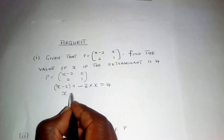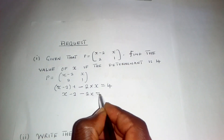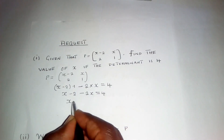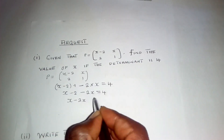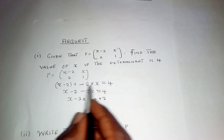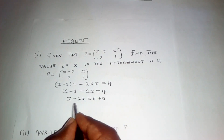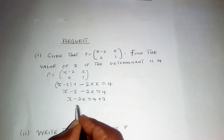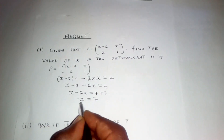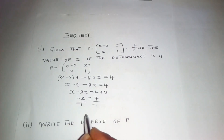So we can solve for x, whereby we group the like terms. These two come here and these will remain like this. So when we say x minus 2x, we have negative x, which is equal to 7. So we want to remain with x — we divide by negative 1.